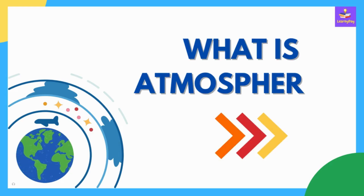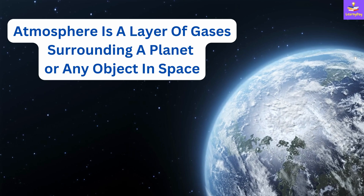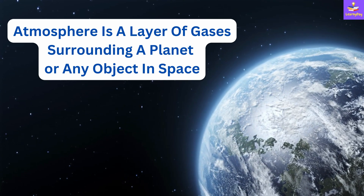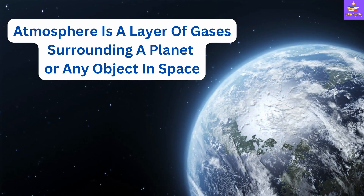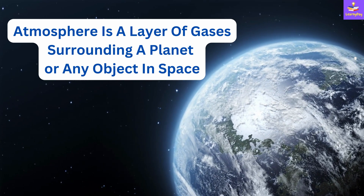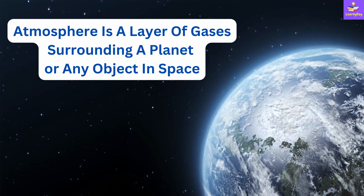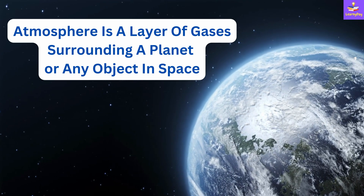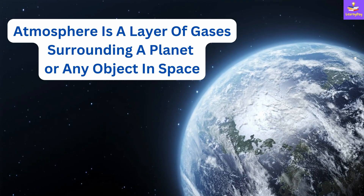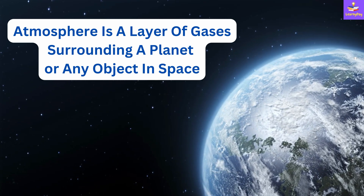What is Atmosphere? Atmosphere is a layer of gases surrounding a planet or any object in space. That means not just Earth, but every planet and object in space has its own atmosphere.